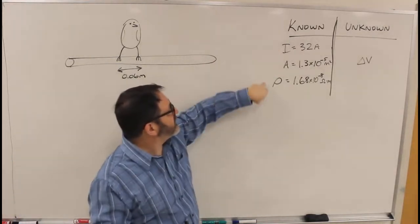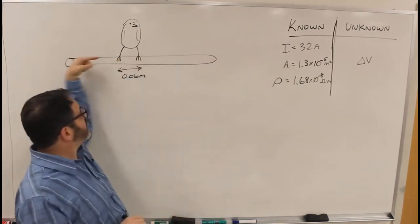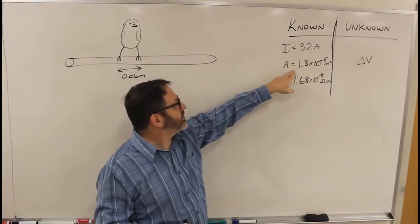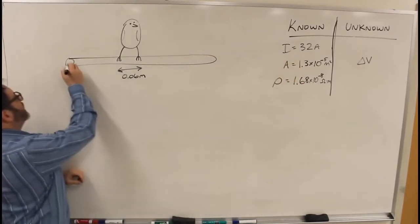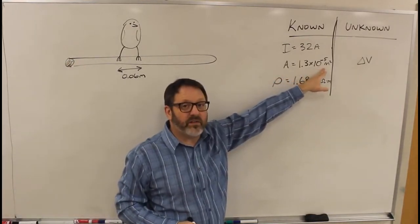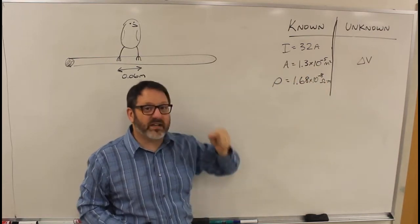And then the rest of the things I put over here into a known column. So the current flowing through this wire is 32 amps. The cross-sectional area of this wire is 1.3 times 10 to the minus 5 square meters. It said 0.13 square centimeters.